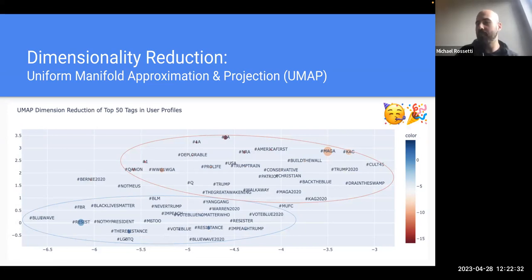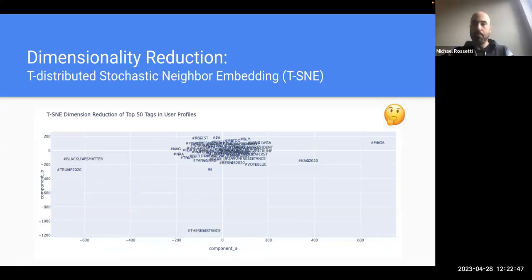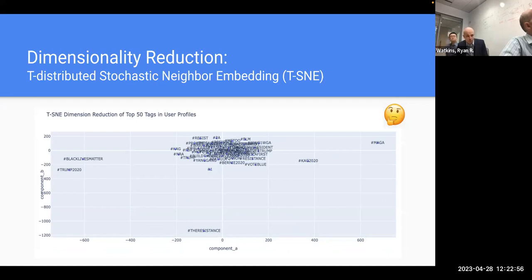Question: Going back to the PCA and TSNE slides - I'm wondering if a lot of that is actually there but just zoomed out because you have such large numbers on the axes. If you took out those outlier ones and zoomed down on the plot, would you get a similar looking cluster? Actually, I can't tell because resist is in the top left and vote blue is in the bottom right - so maybe they aren't mapping very well. There isn't as consistent a grouping there.